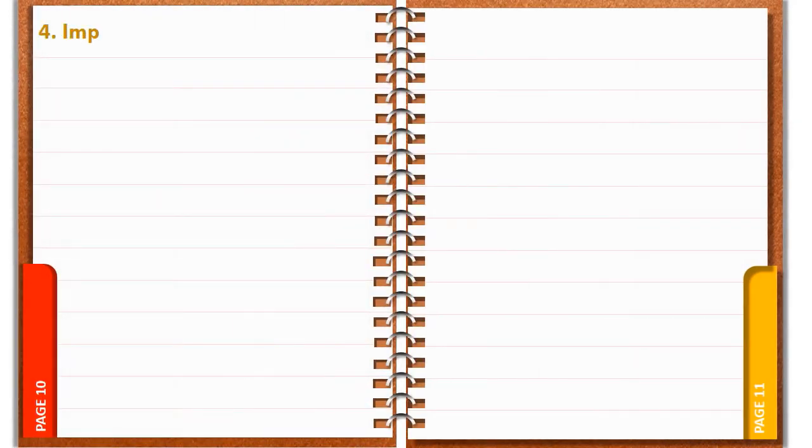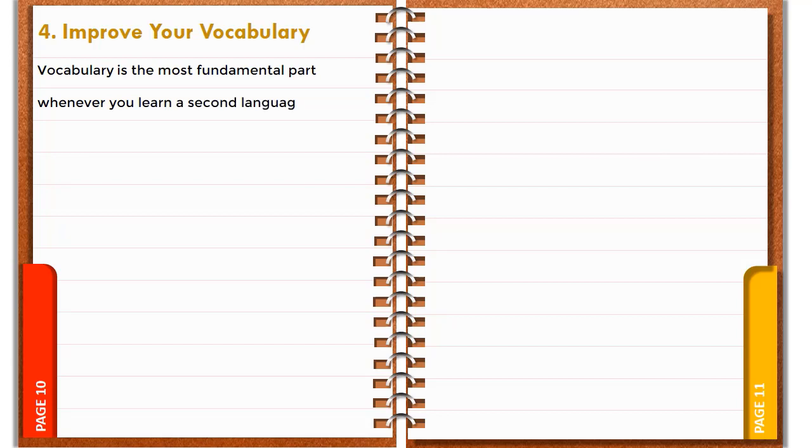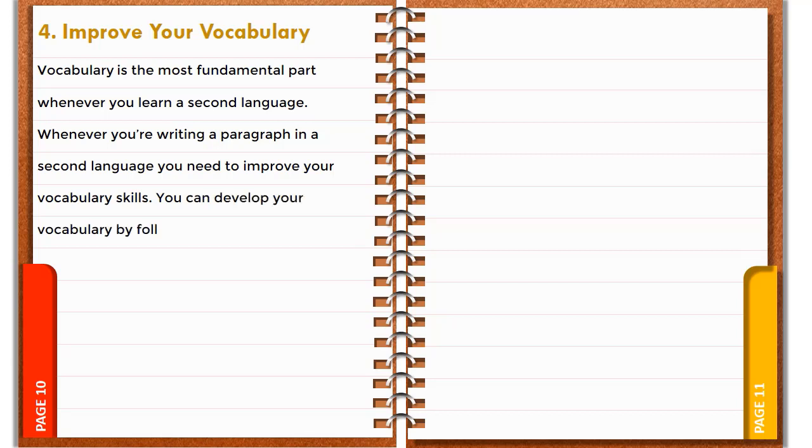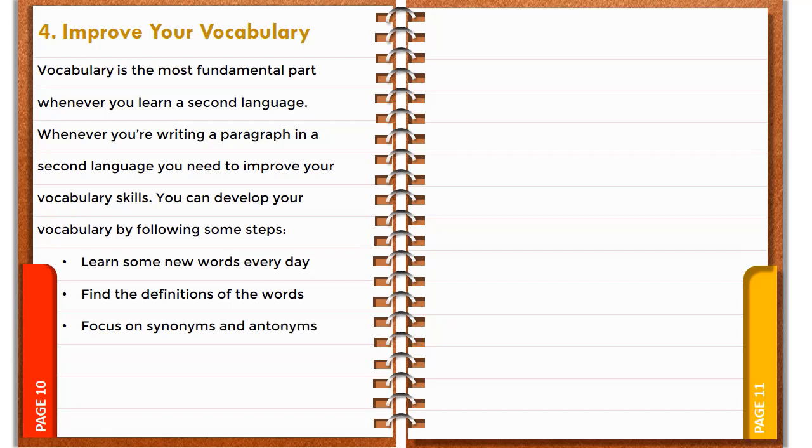Number 4: Improve Your Vocabulary. Vocabulary is the most fundamental part whenever you learn a second language. Whenever you're writing a paragraph in a second language, you need to improve your vocabulary skills. You can develop your vocabulary by following some steps: Learn some new words every day. Find the definitions of the words. Focus on synonyms and antonyms. Use an online or offline dictionary. Develop necessary vocabulary.